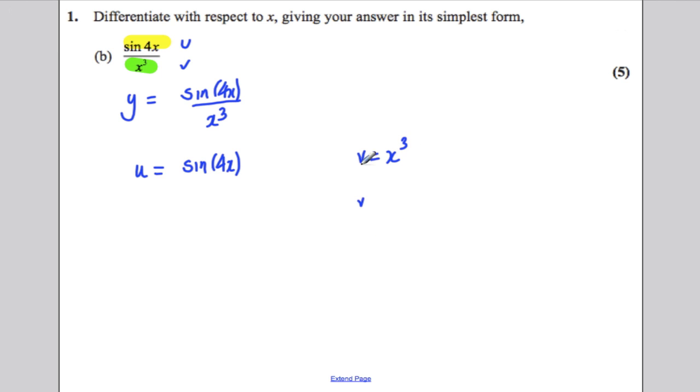Now, the easiest one to differentiate here is v. v dash would be 3x squared. U dash, well, when you do the chain rule here, you differentiate inside the brackets, you get 4. You differentiate sine, you get cos. And then you evaluate it at what was originally inside the brackets, 4x.